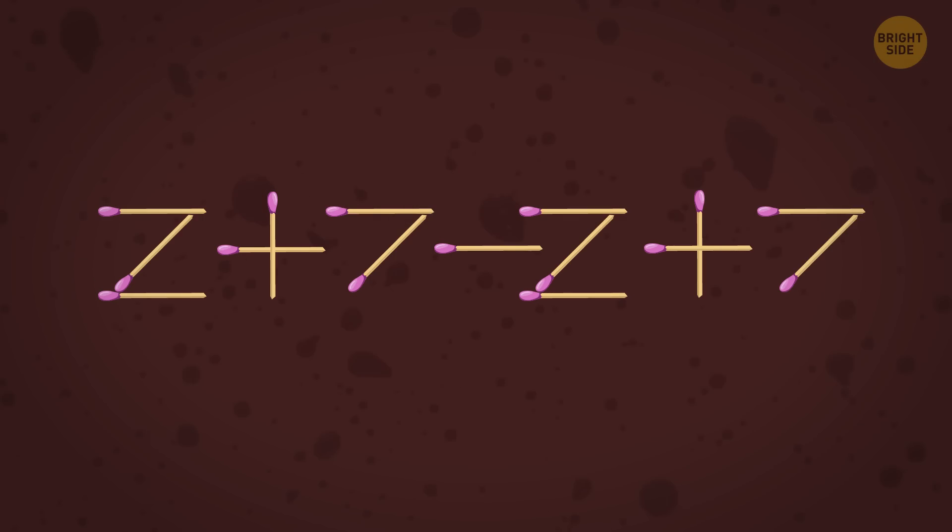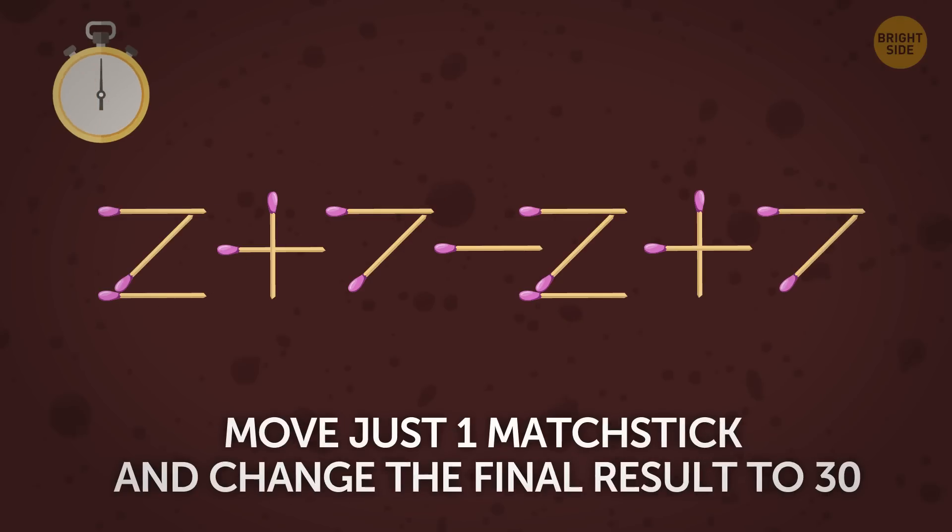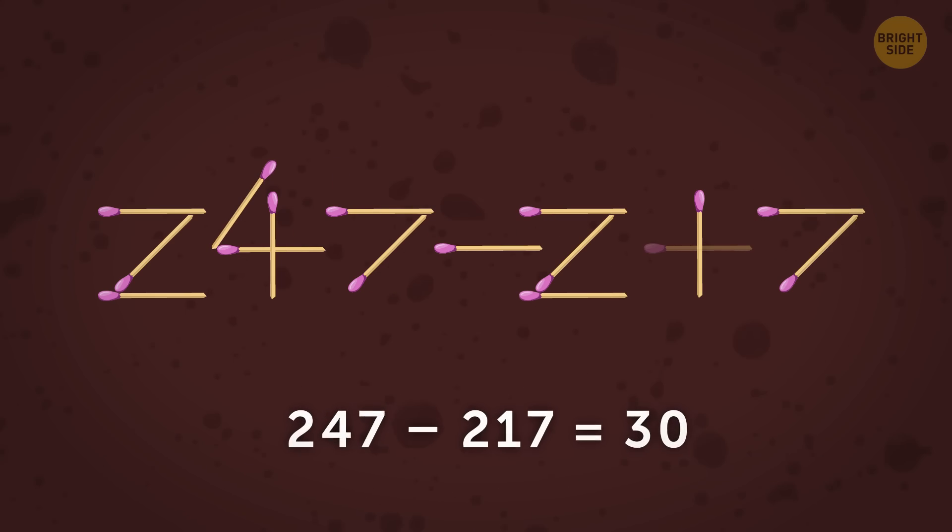You don't have to be a great mathematician to solve the next riddle. But it can make your brain sweat. 2 plus 7 minus 2 plus 7 equals 14. Can you move just one matchstick and change the final result to 30? Voila.